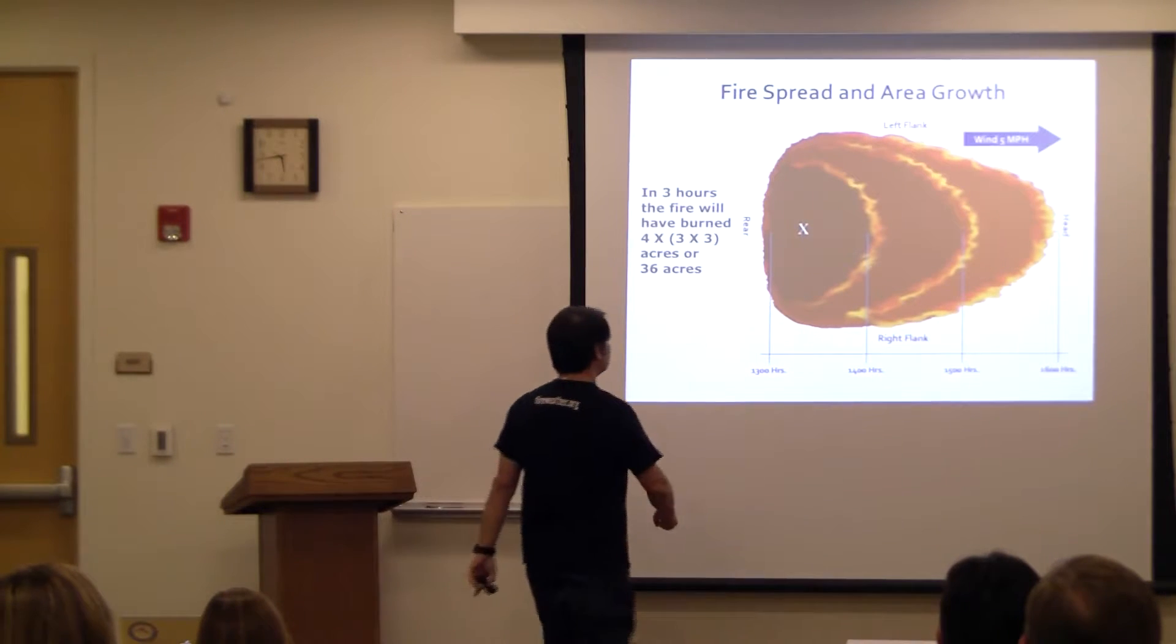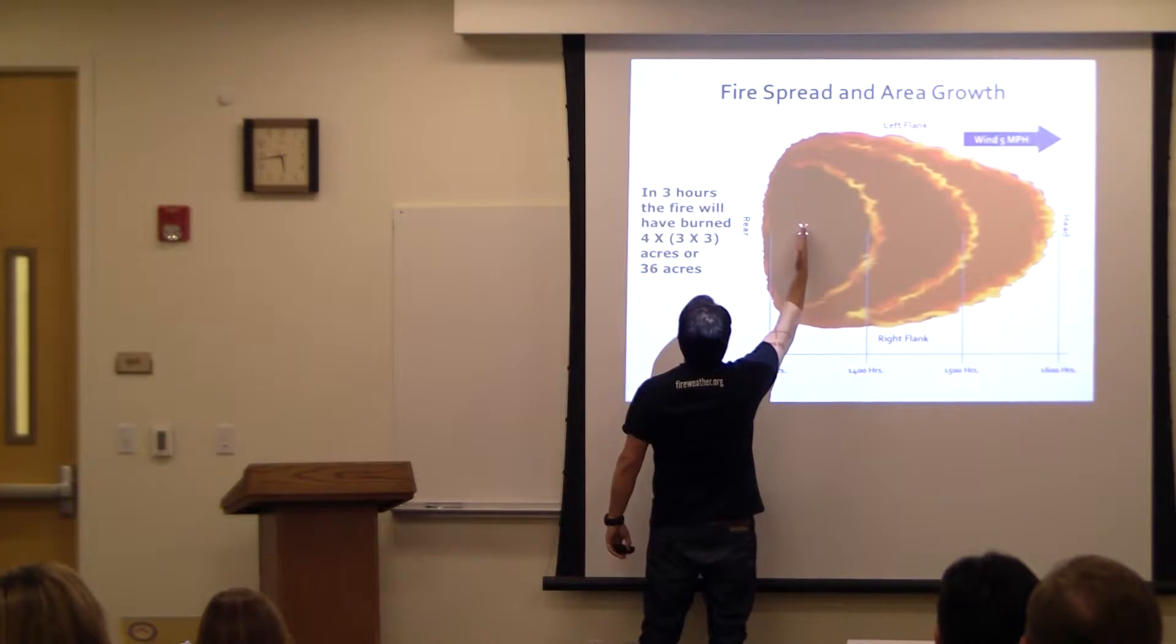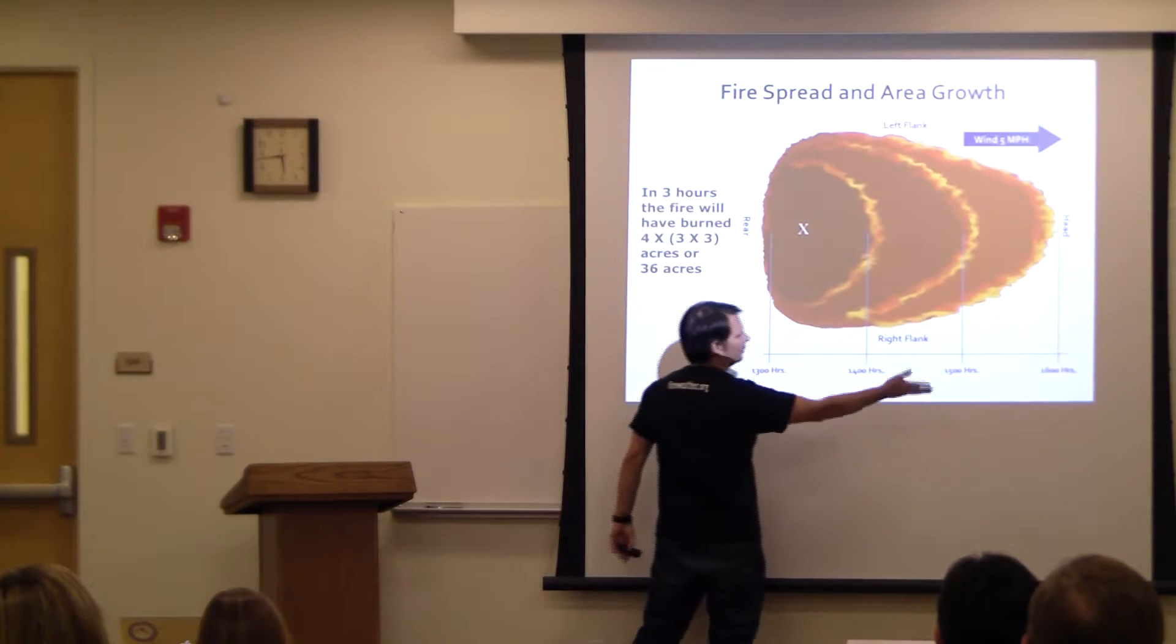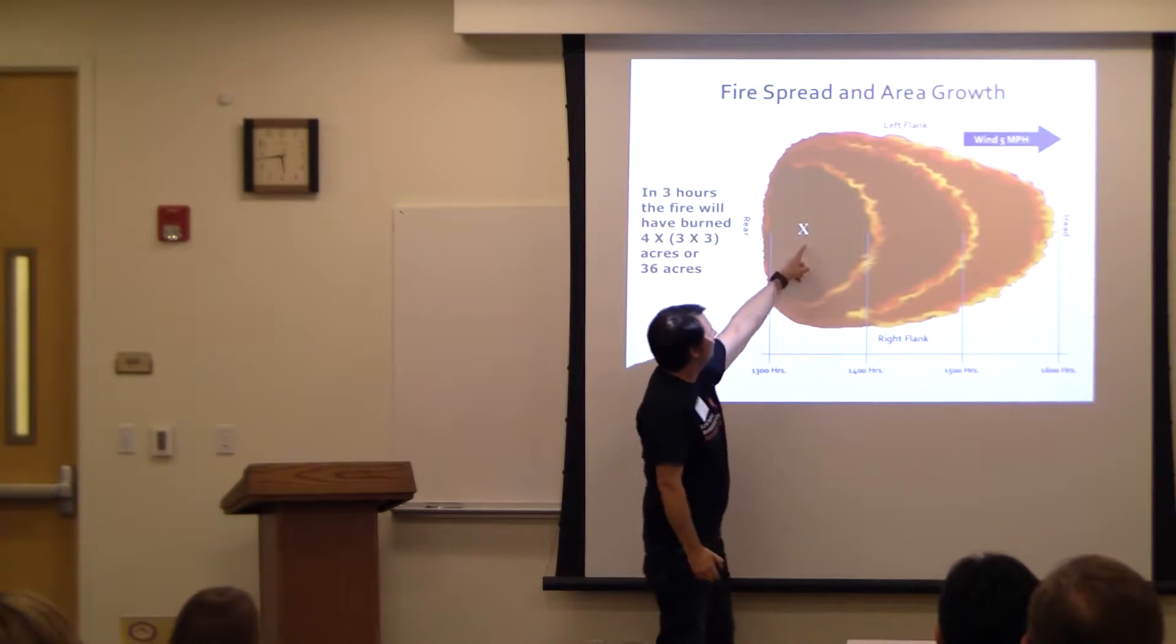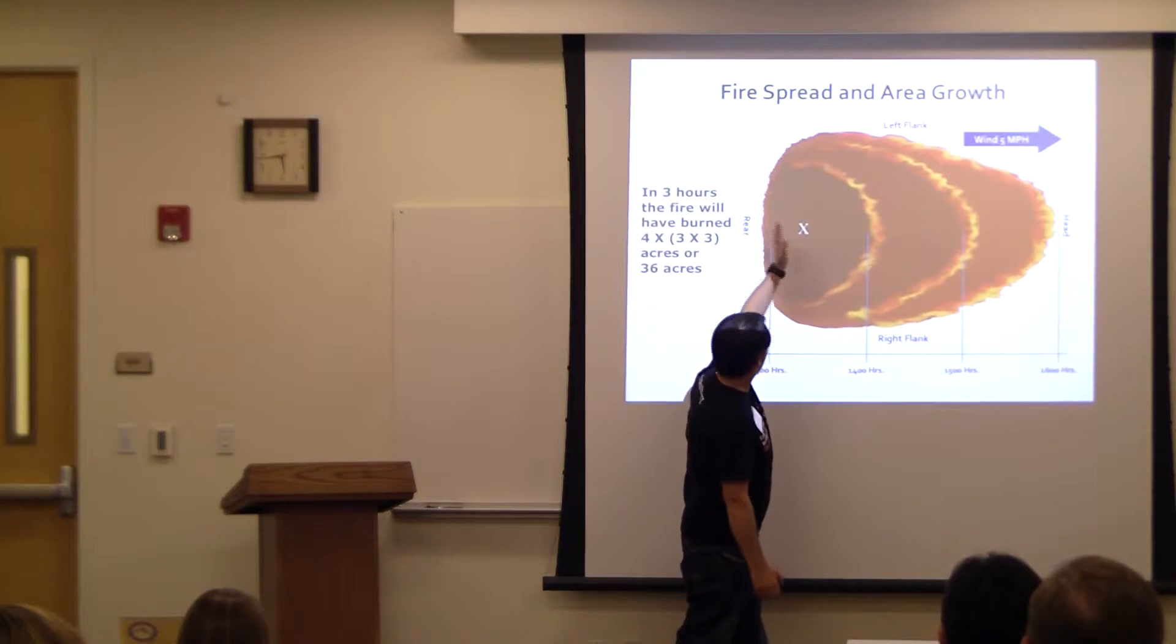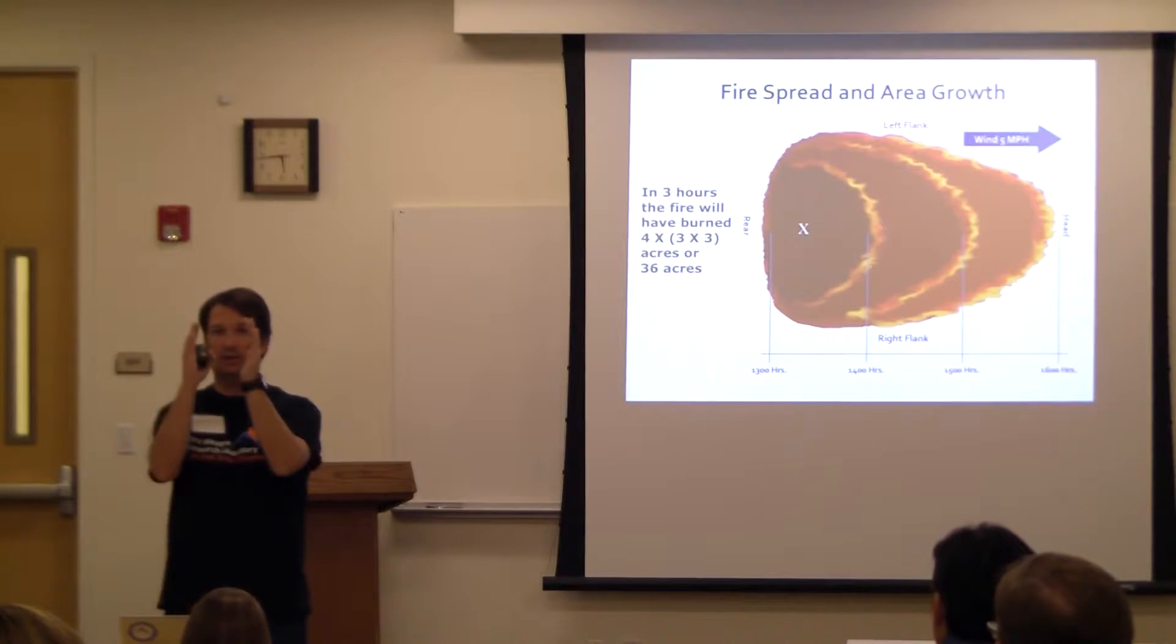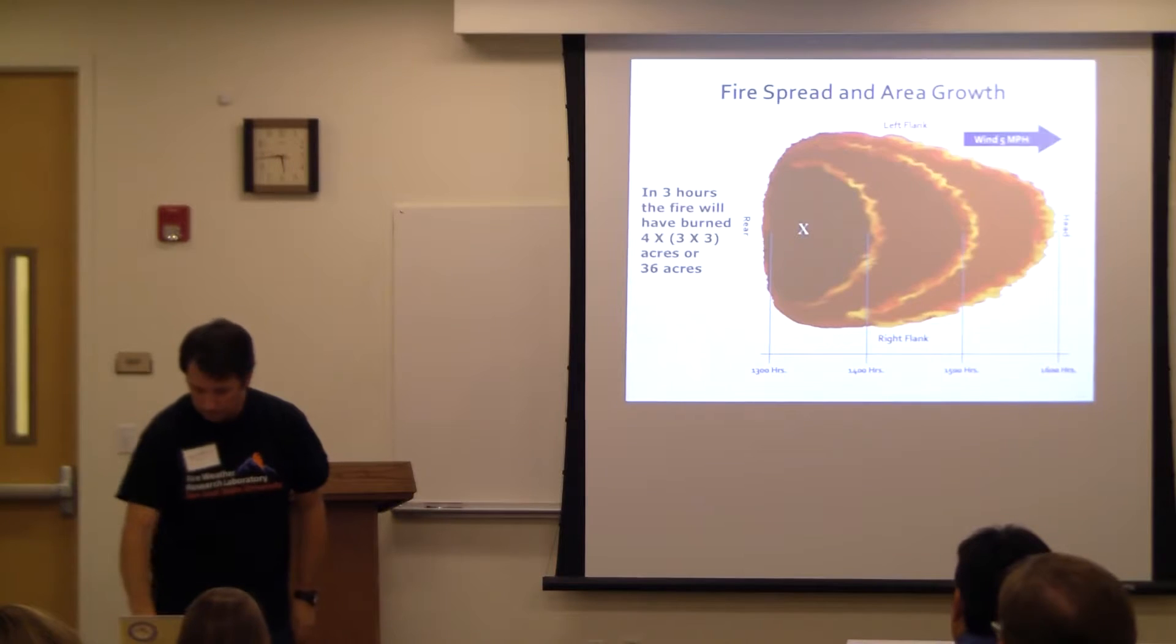What's shown is that in three hours, fire will burn - you can calculate this area. But basically it takes a little bit of time to go this way, even though it's off, but it's much faster, it burns more downwind. And the higher, the faster the wind, the more narrow the shape of the fire.